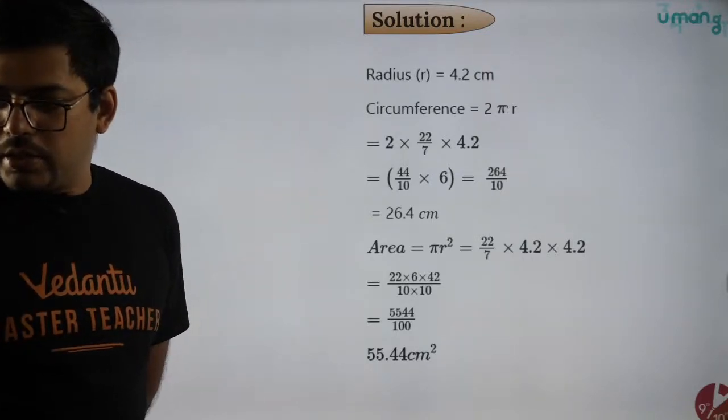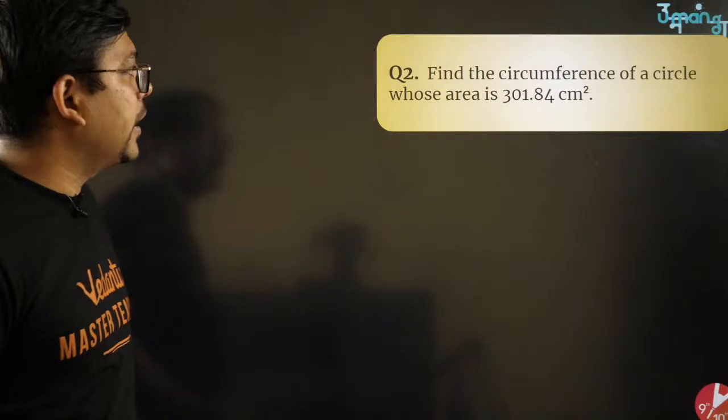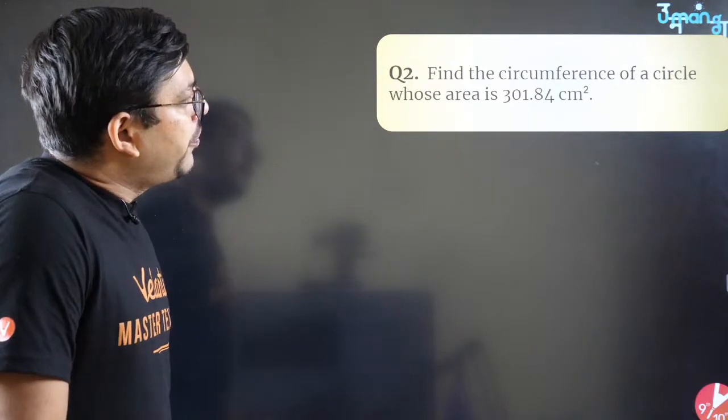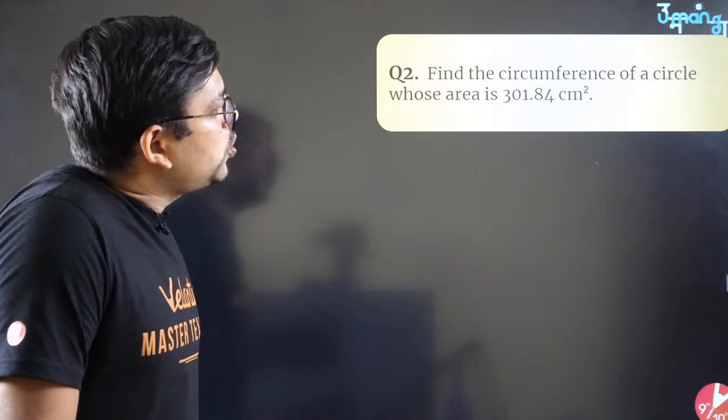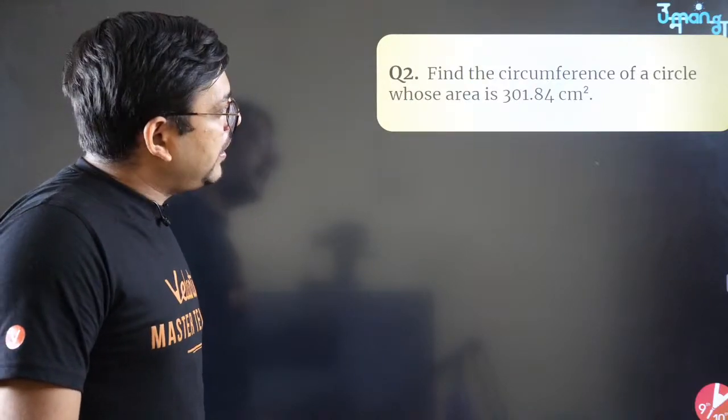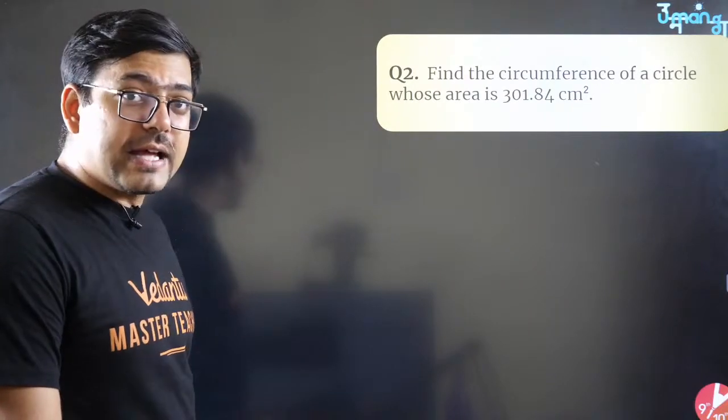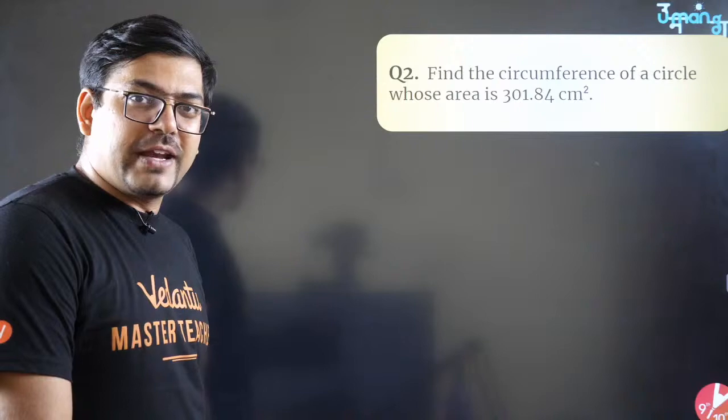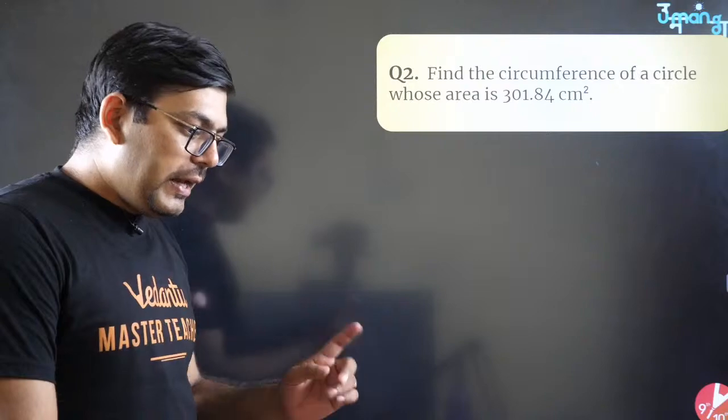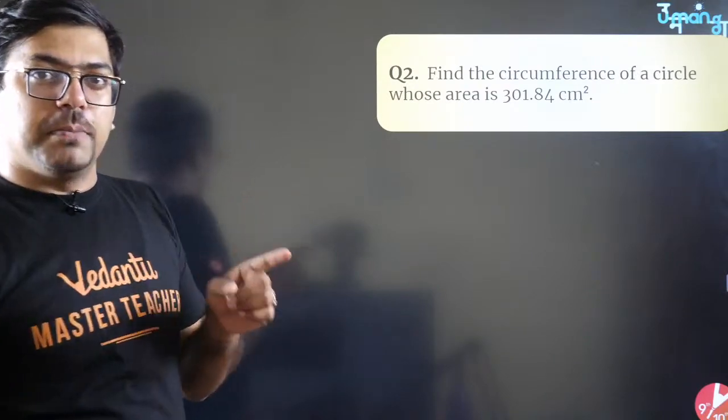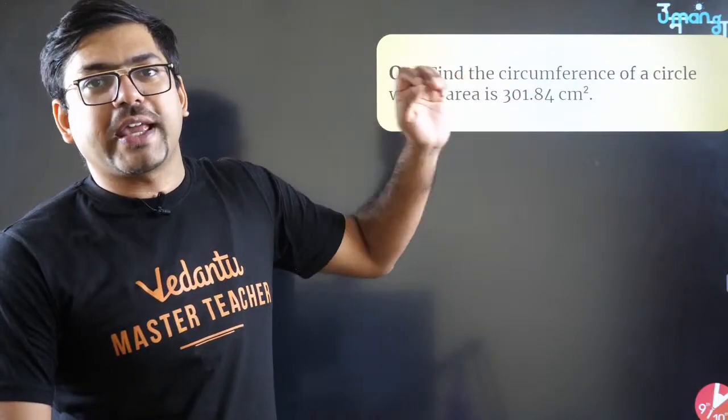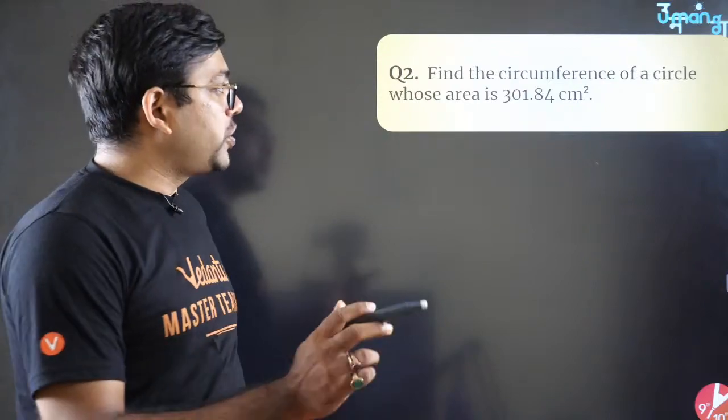Agla question dekho. Find the circumference of a circle whose area is 301.84 cm². Itna ganda figure kaun deta yaar. Agar pehli baar mein is question ko dekhoon toh tumhare hisab se, jaise tum log sochte ho, main sochta ki yaar ye question ghatiya hai aur main isko aakhiri mein solve karta. Lekin jo ek samajhdar bachcha hoga wo ye samjhega ki board wale itne dardnaak log nahi hain, itne bure bhi nahi hain. Unhone ye value di hai toh zaroor ye cancel out ho raha hoga.